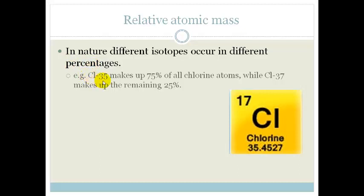For example, chlorine-35 makes up 75% of all the chlorine atoms, while chlorine-37 makes up the remaining 25%. So this 35.4527 is an average of these two. Let's see how we could work that out.